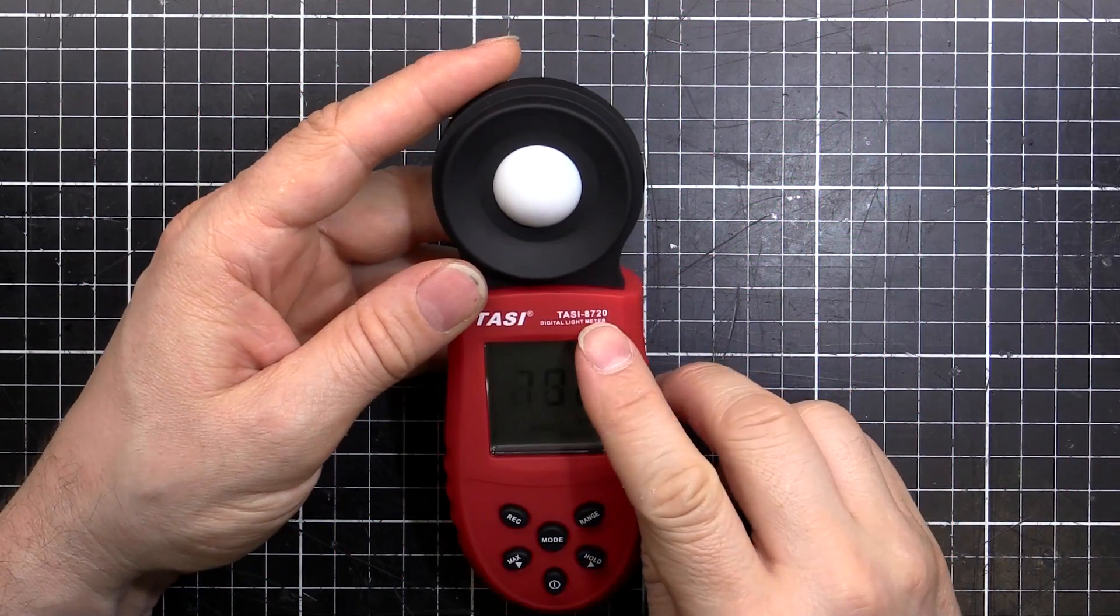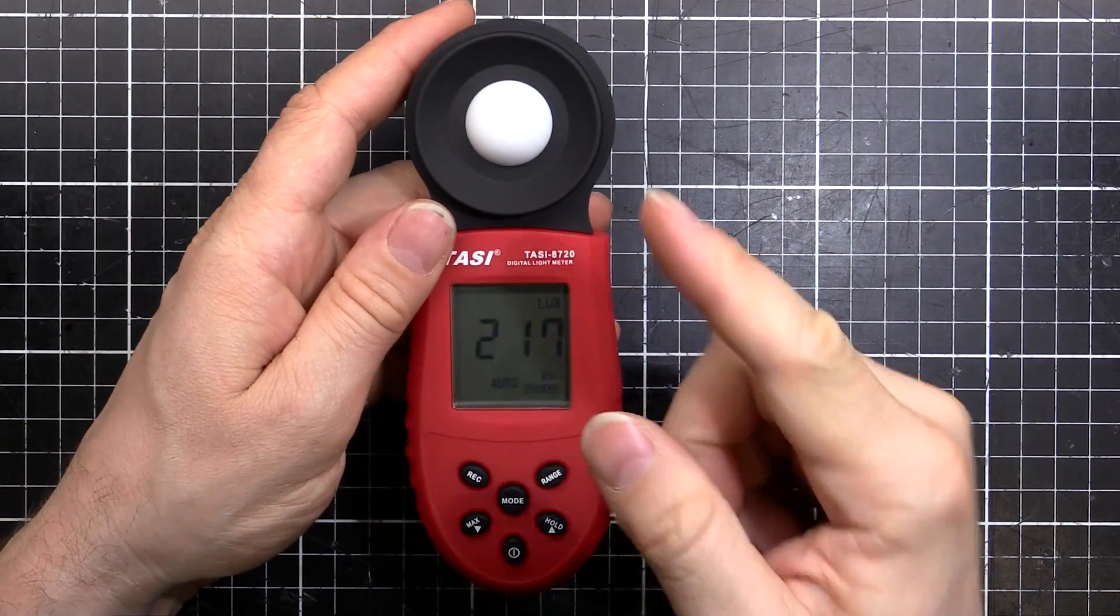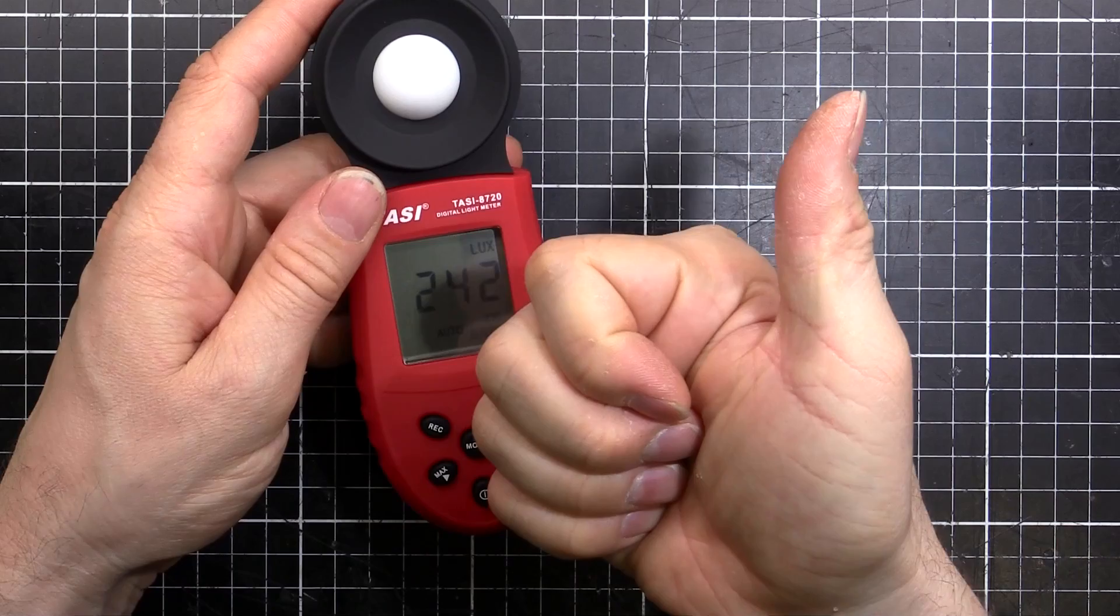So that's it for a quick look inside a TASI 8720 digital light meter. Hope you enjoyed that. Don't forget we've got that Patreon and we'll see you next time.